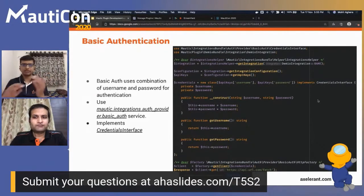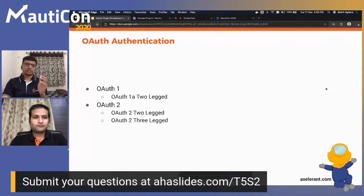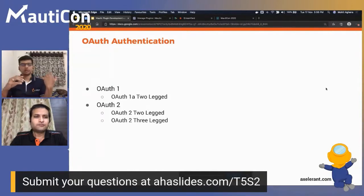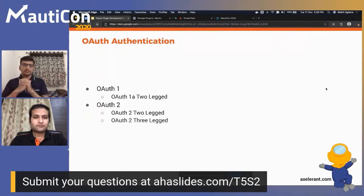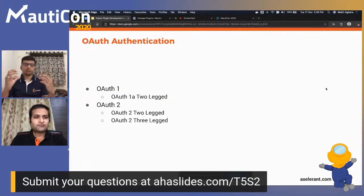Basic authentication is straightforward — a credentials class that implements a credentials interface. It's a BasicAuth service with a couple of methods defined in the interface: getUsername, getPassword, and authenticate. Moving on to OAuth: by default the Integration Bundle provides OAuth 1 and OAuth 2 — OAuth 1 two-legged, and OAuth 2 two-legged and three-legged. The overall flow is that the consumer requests an access token using a consumer key and consumer secret key.